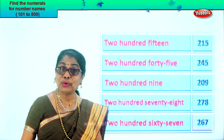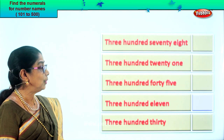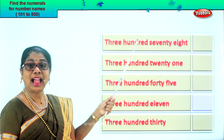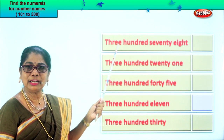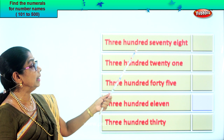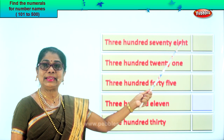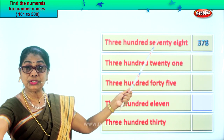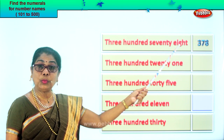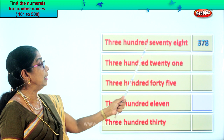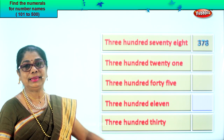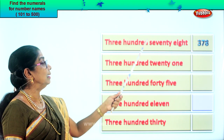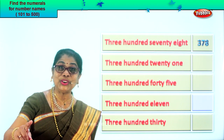Let's get on with some more exercises to fill in the correct numeral. The first one — let's read: three hundred seventy-eight. What's the number in the hundredth place? Three. Seventy-eight — seven in the tens place, eight in the ones place. Three hundred seventy-eight. Now let's read the numeral: three hundred seventy-eight. Did you enjoy?